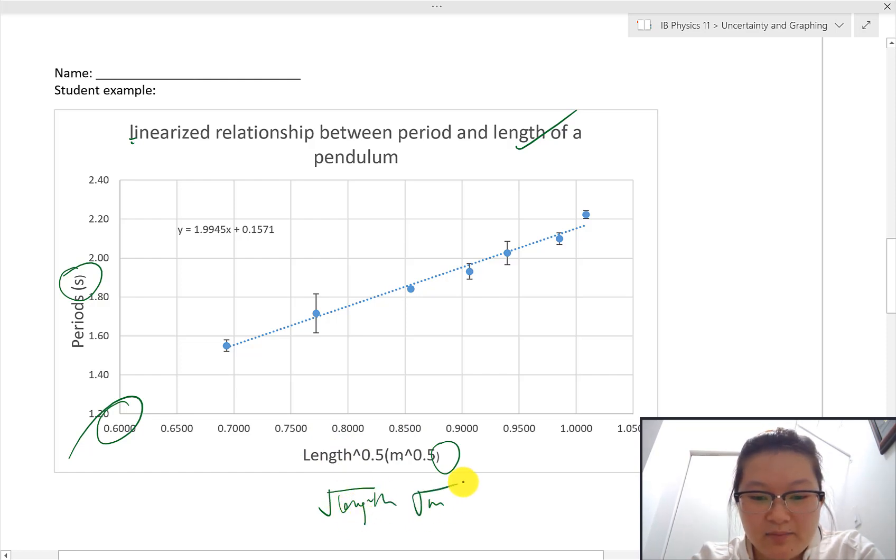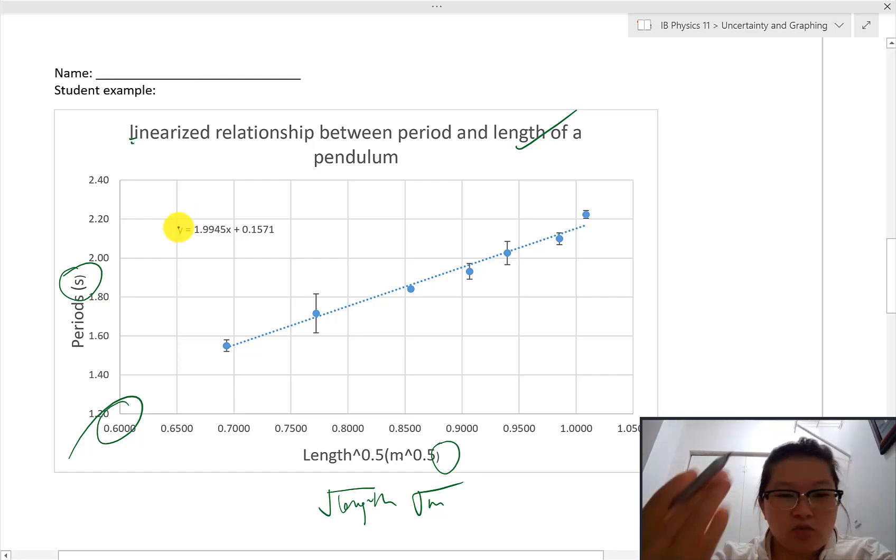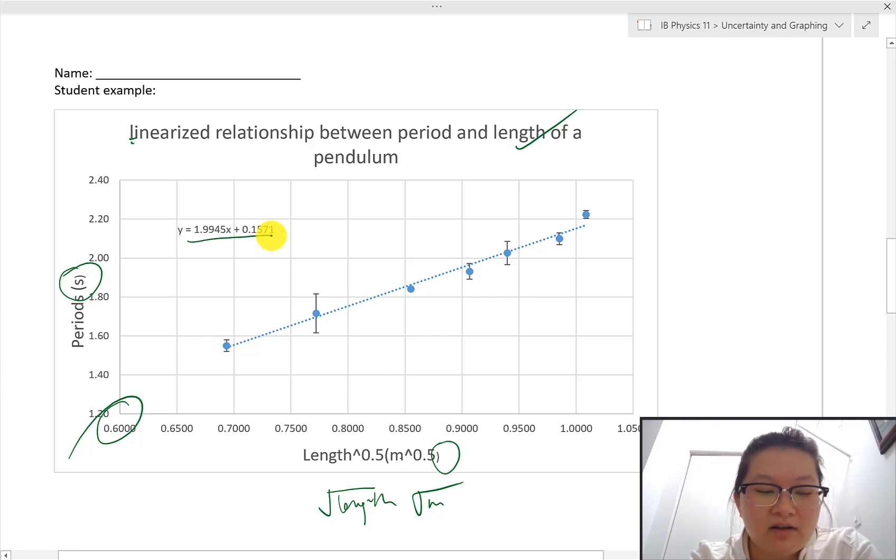And I do like the fact that the student put the exponents for the axes and the units. Although it would have been nicer if the student actually were able to show the square root of length instead. So kind of like that. But if not, I mean, this is it's feasible. It's doable. I guess this probably was in the middle of his work so that the slope values are not rounded. And then we have the slope over here for this particular graph.